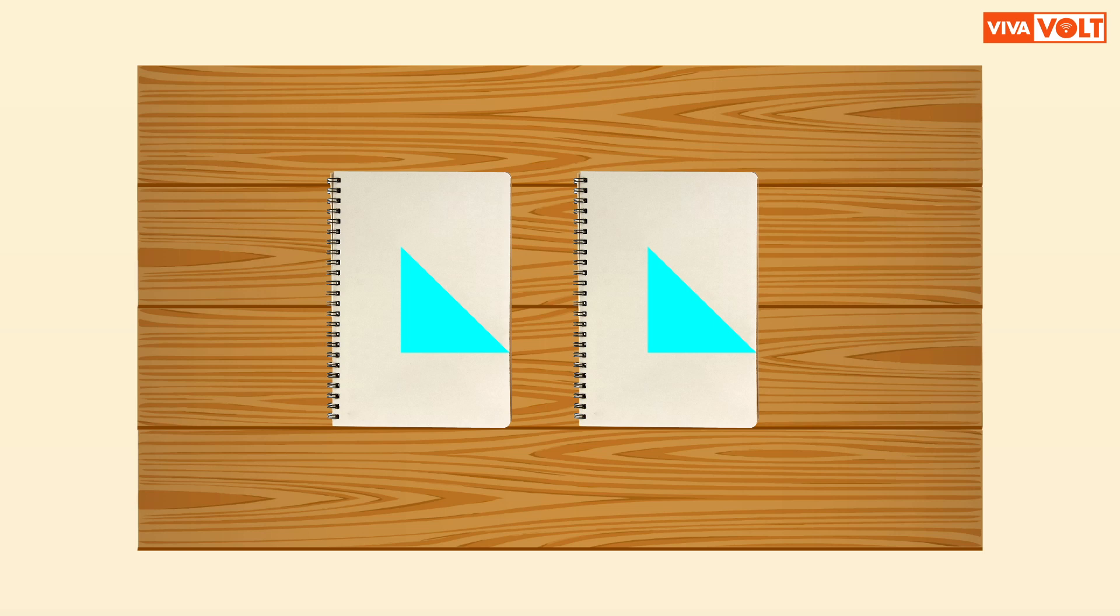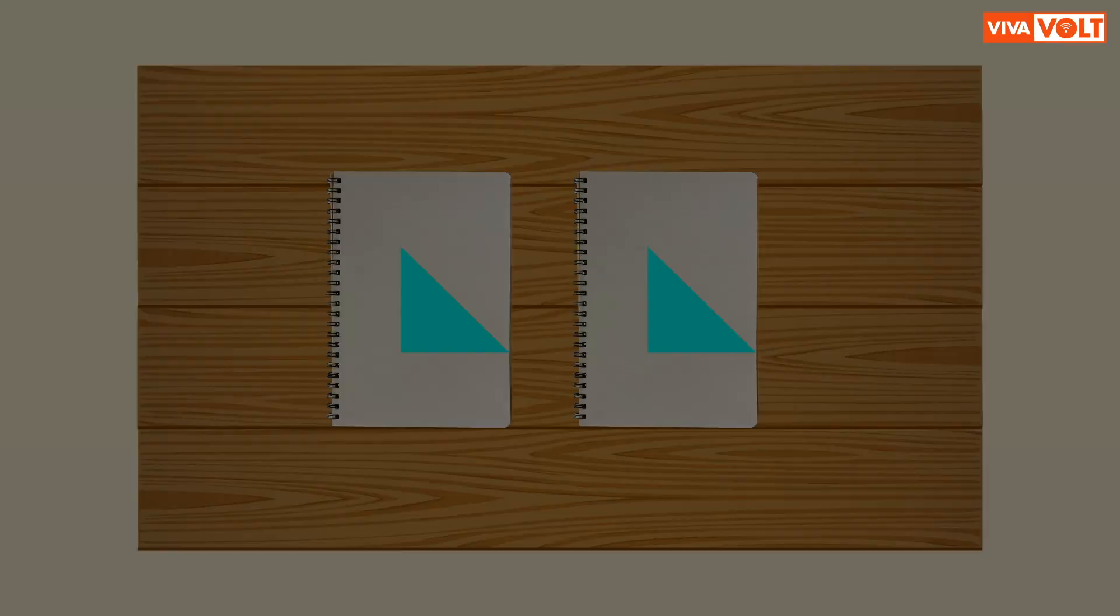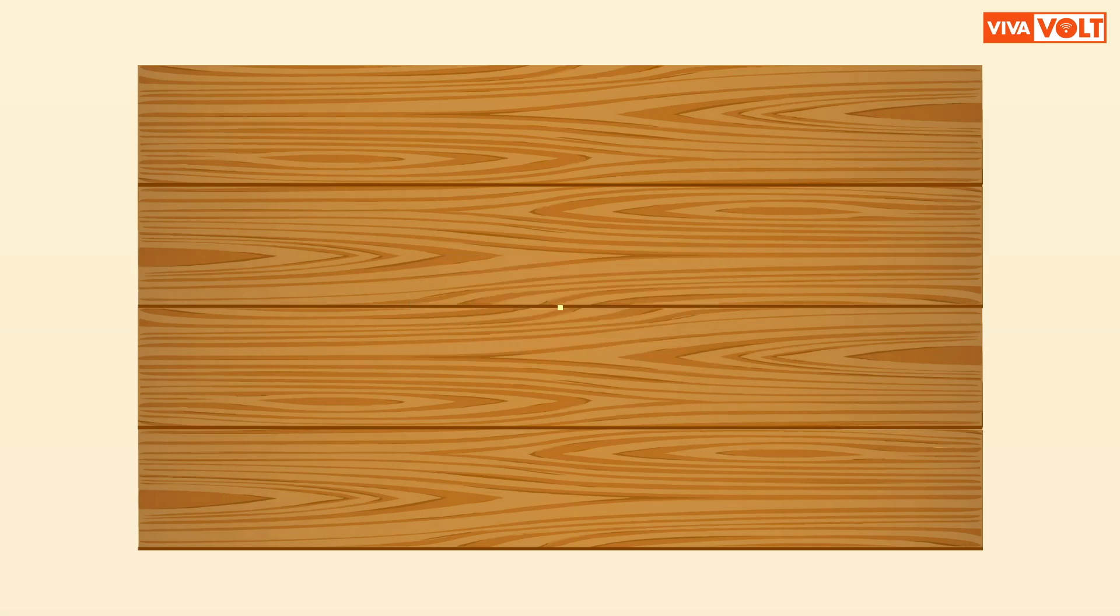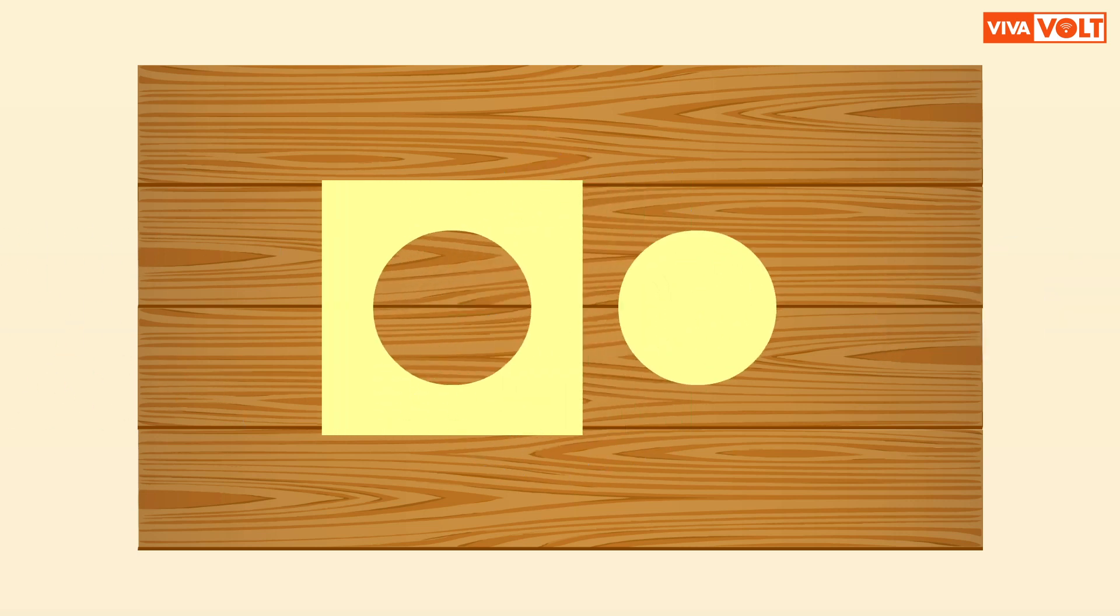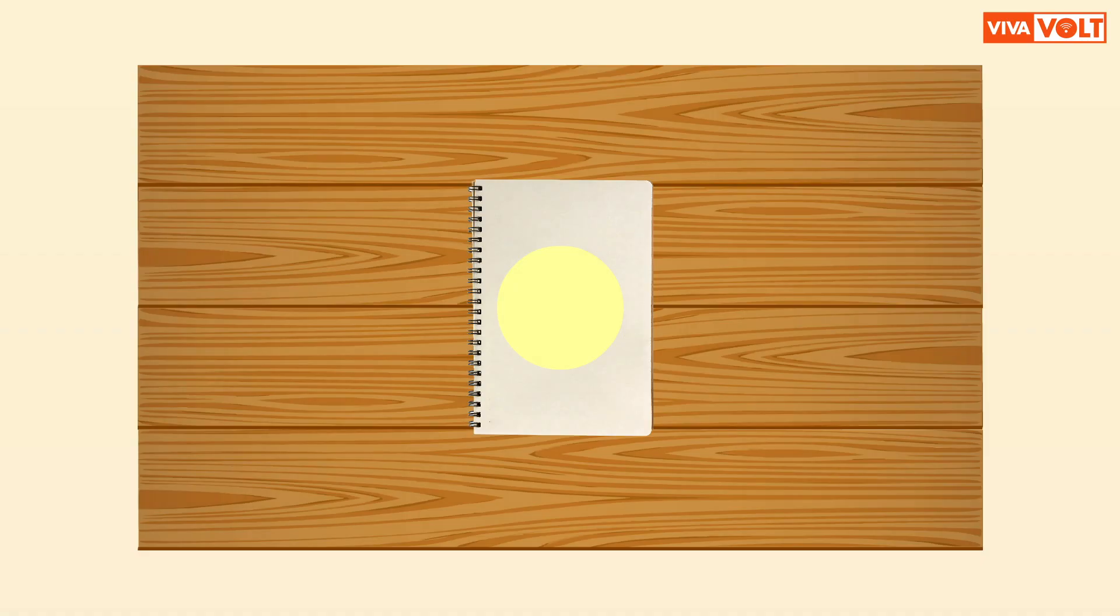Circle. Take a colored sheet. Place any circular object on it and draw its outline. Cut the circle using scissors with the help of an elder. Paste the oval form in your notebook.